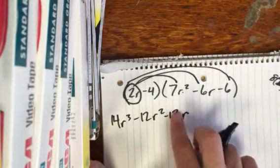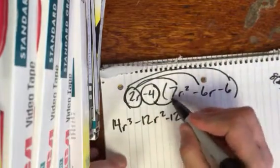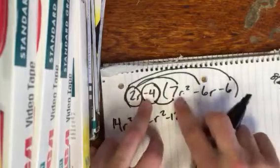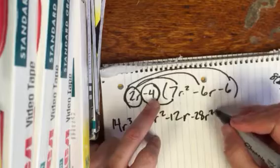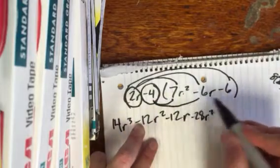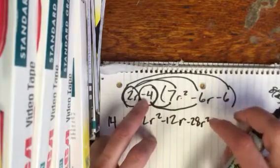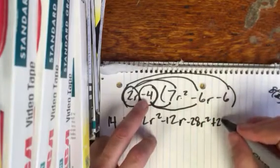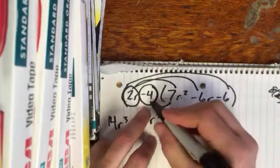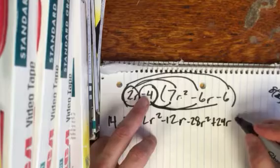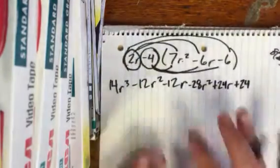Now, I've got half of my problem. Now I need to do the same thing with negative 4. So negative 4 times 7 is negative 28. There's no r's there, but we've got to keep our r squared, so it stays with it. Negative 4 times negative 6 is positive, because negative times a negative equals a positive, 24. And then there's no r there, so the r stays there. And then negative 4 times negative 6, a negative times a negative is a positive, and then 4 times 6 is 24. You're not done yet.